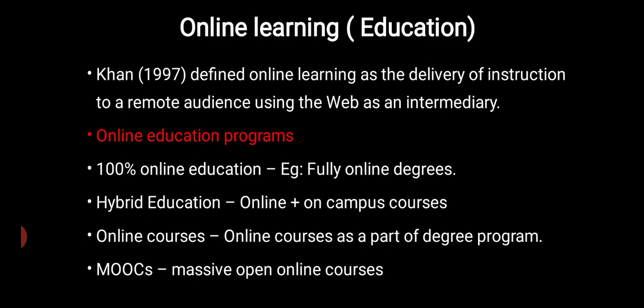Third are online courses, where some universities offer certain courses online alongside their offline degree programs — for example, a diploma in computerized accounting offered as an online subject within an offline program. The last type is MOOC — Massive Open Online Courses — which deliver lectures from an online classroom to a large number of students, with a large number of courses offered on the platform.